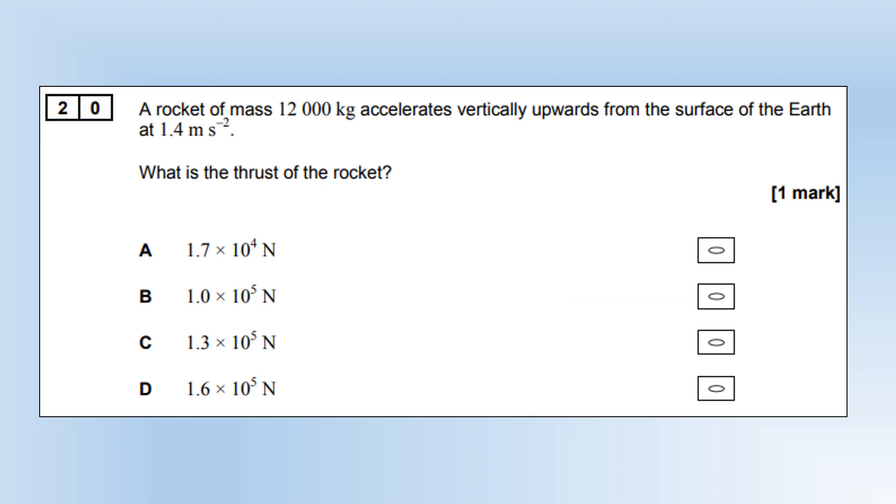A rocket of mass 12 tonnes accelerates vertically upwards from the surface of the Earth at 1.4 meters per second squared. What is the thrust of the rocket? I'm going to use Newton's second law, assuming the mass of the rocket stays the same. The thrust is going to be the resultant force plus the weight force. Plug the numbers in and we end up with option C.